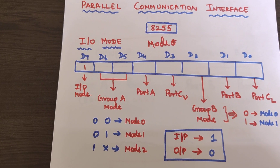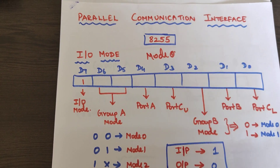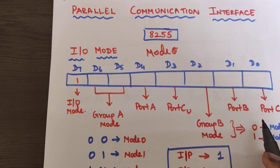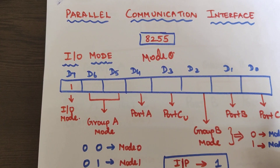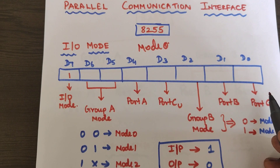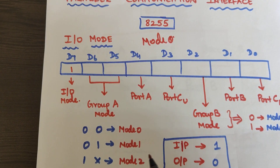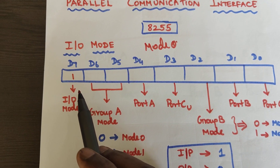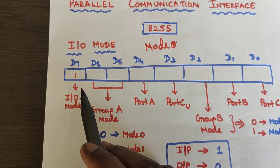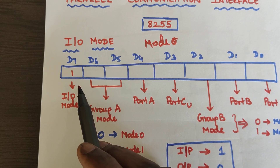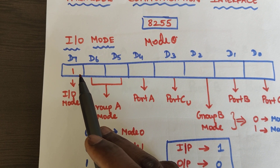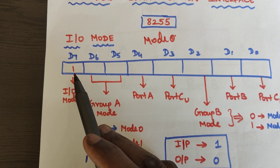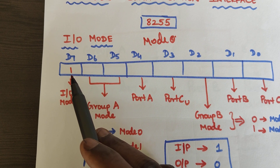This is the data format for the input/output mode. It is an 8-bit format, D0 to D7. D7 always represents whether it is IO mode or BSR mode. When D7 is 1, it belongs to IO mode; if it is 0, it is BSR mode.